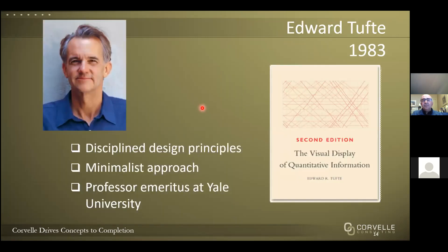Edward Tufte, with disciplined design principles and a persuasive voice, created an enduring theory of information design in his book The Visual Display of Quantitative Information. Graphic excellence, in his view, gives the viewer the greatest number of ideas in the shortest amount of time with the least ink in the smallest space. His data-to-ink ratio concept holds that the higher the share of ink devoted to actual data, the better. One of his key phrases is 'above all else, show the data.' He emphasized that chart junk can never rescue a thin data set — a minimalist approach is paramount.